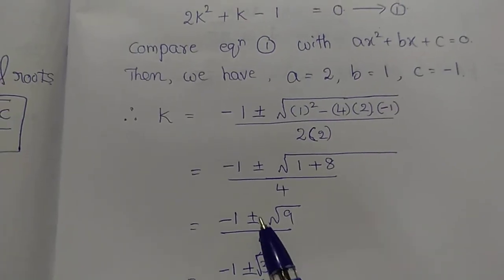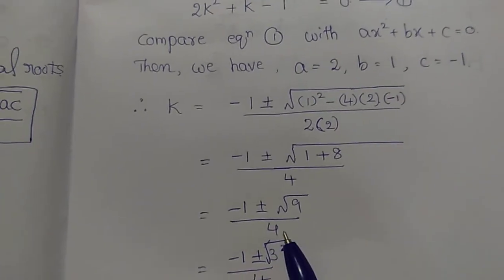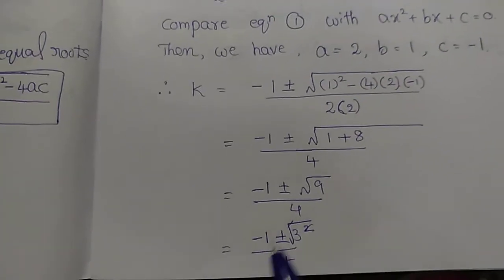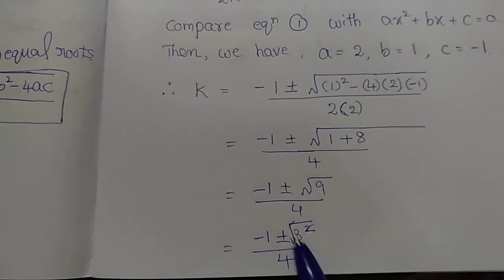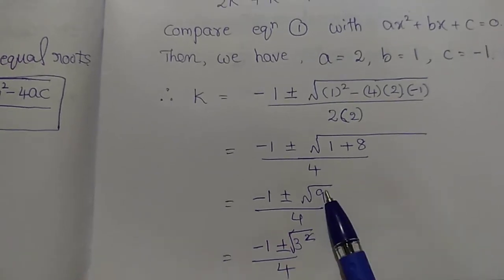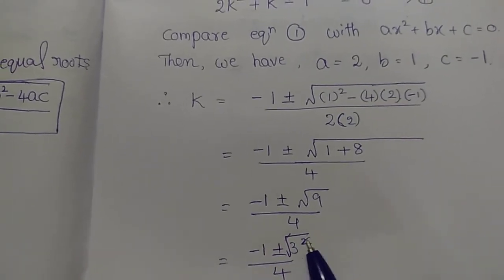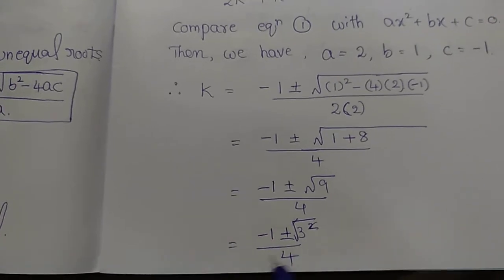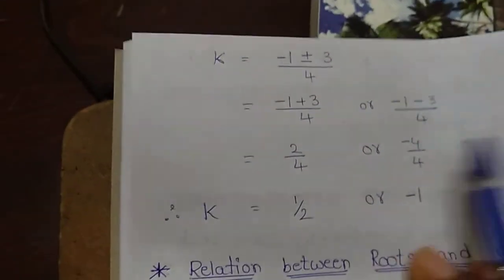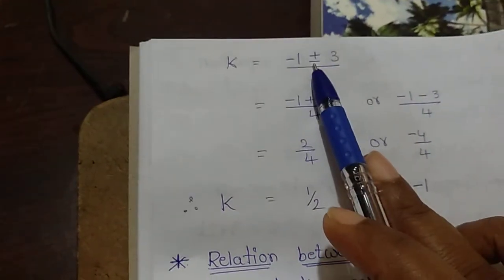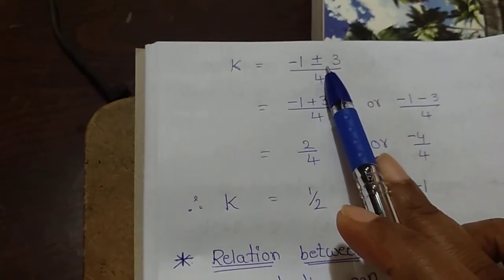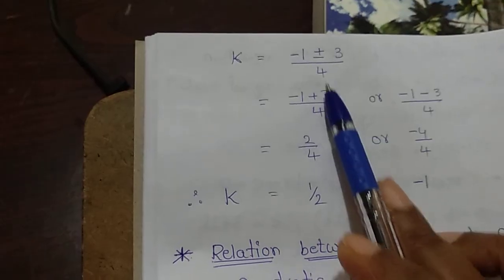We get k equals minus 1 plus or minus under root 9 by 4. Since 9 equals 3 squared, the square root and square cancel, giving k equals minus 1 plus or minus 3 by 4.